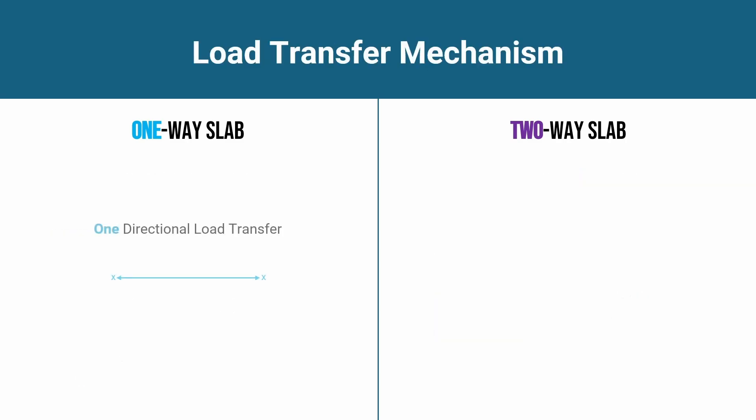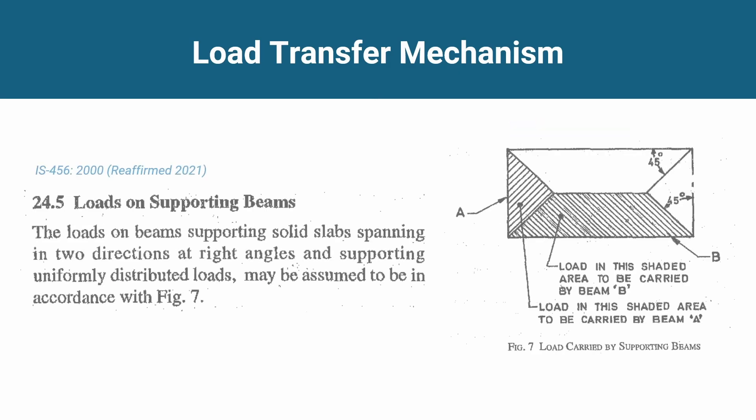Now let's look at the load transfer mechanism. In a one-way slab, the load transfer is one-directional only because the main deflection is along one direction. However, in a two-way slab, since the deflection is along both axes, the load transfer is also along both axes — it is a two-directional load transfer.